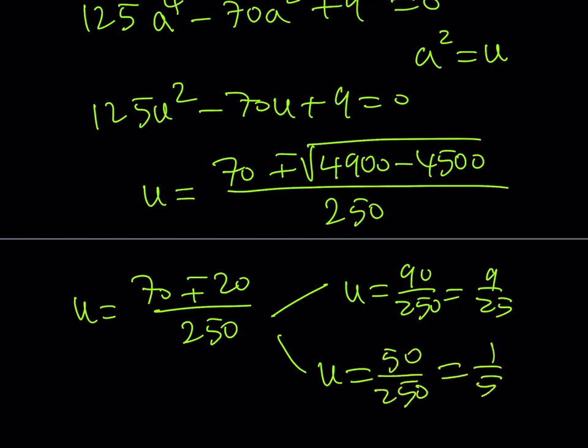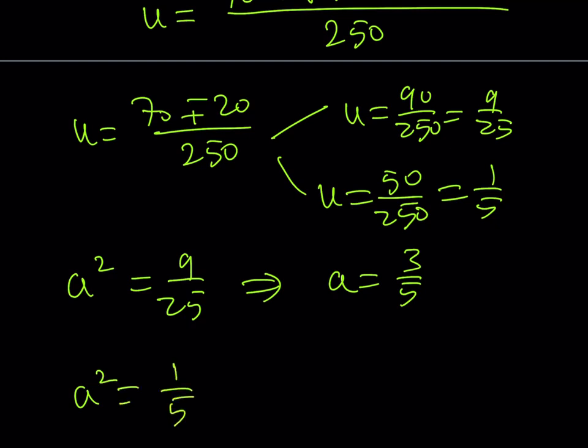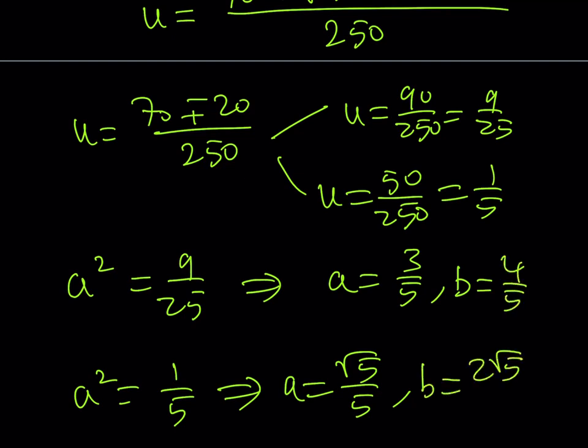Now what we need to do is we need to take the square root, because A squared equals U. So if A squared is 9 over 25, obviously we're not going to accept negative solutions. So A can be 3 over 5, and from the second one, it can be 1 over root 5, or you can write it as root 5 over 5. Obviously, A squared plus B squared equals 1. So from here, if you do the math, you'll get B equals 4 over 5, or B equals 2 root 5 over 5.